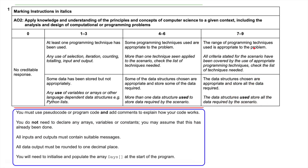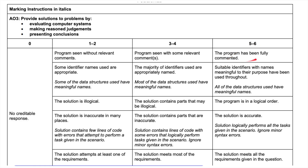Moving on to the next six marks — the program has been fully commented. Even if the code doesn't work or is unusual, if you've fully commented it you pick up marks. Suitable identifiers with meaningful names are also important — variables, constants, everything must have appropriate names. The array names have been given to you. The program should run in a logical order and the solution should be accurate. As a marker, if you're commenting your code and using correct, meaningful names for variables and constants, you are picking up marks.